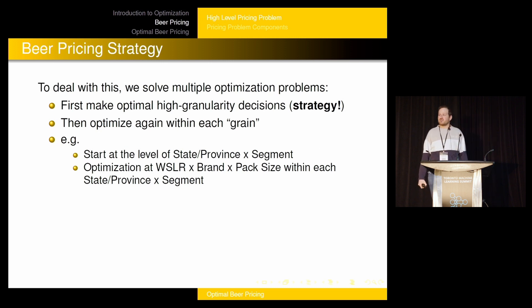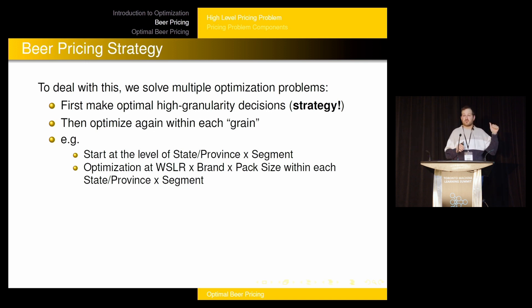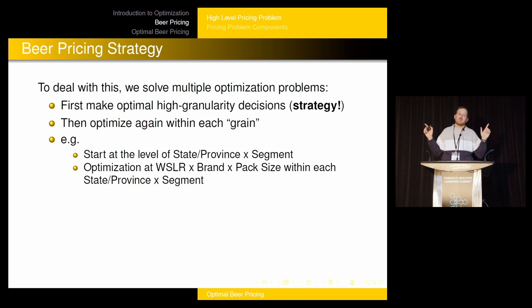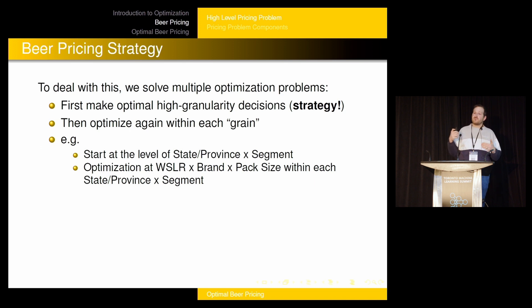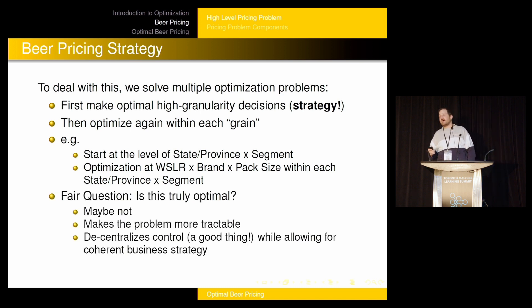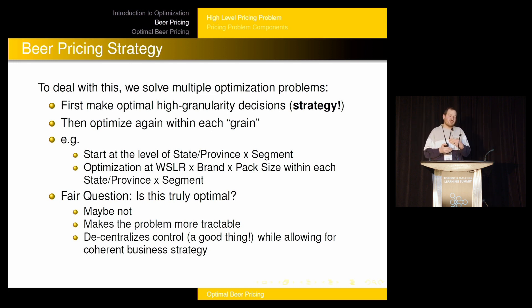To solve this problem across all different levels of granularity — different geographies, pack sizes, products — we break it up into multiple different optimization problems. We start at a high granularity making high-level decisions, what we call strategy, at the level of state or province crossed with segment. For example, in Ontario for super premium beer, I set the average price per hectoliter for super premium beer in Ontario. I don't worry about pack sizes yet. Then we ask: is this truly optimal? Could we have done better if we looked at the whole problem in one shot? That's a fair question — and it may not be optimal — but that combined problem becomes almost intractable.